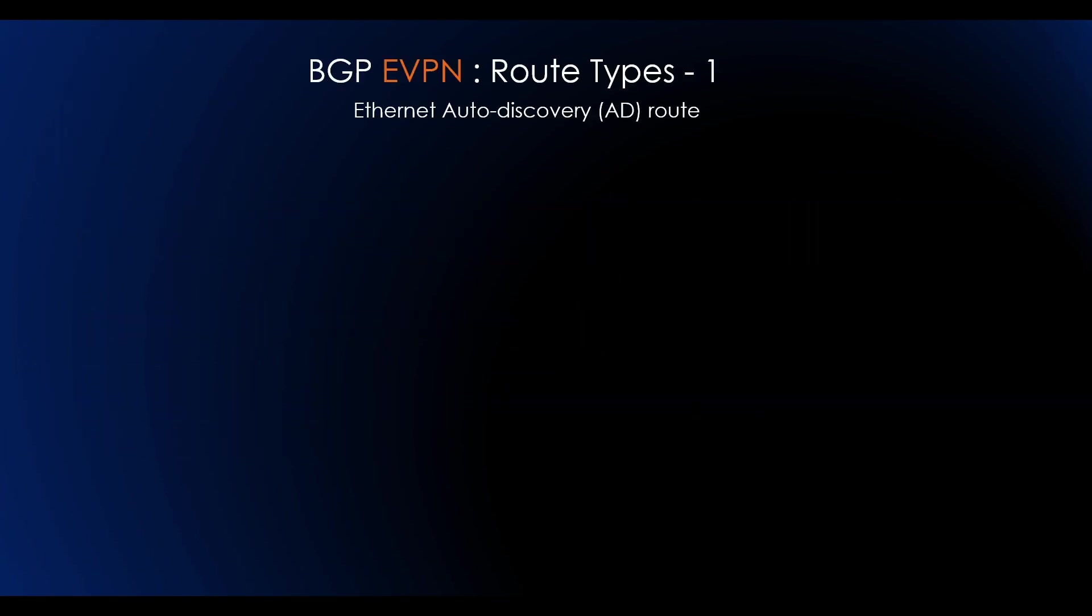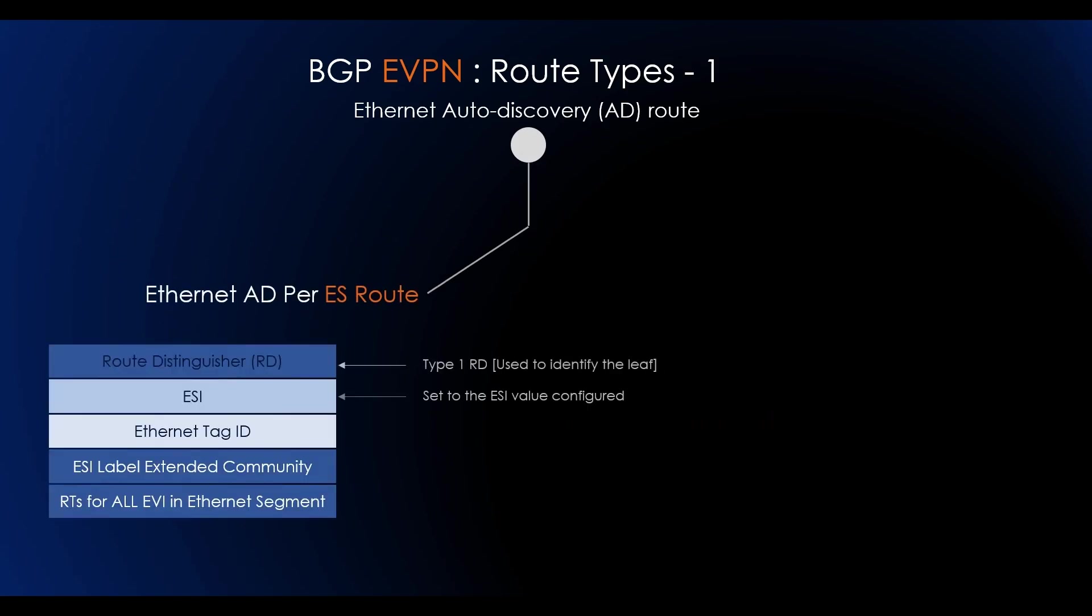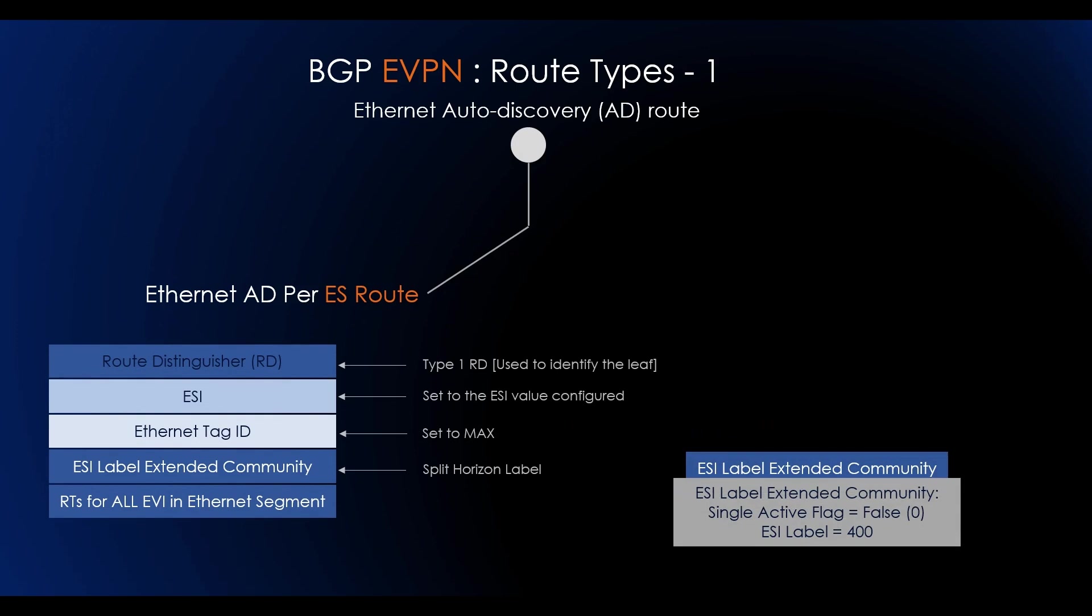EVPN route type 1, which is Ethernet auto-discovery route. The first one is Ethernet AD per ES route. In Ethernet AD per ES route, it is being used to advertise ESI label to the peers. Active-active site leafs must advertise an ESI label in the AD per ES routes. The non-DF must append the ESI label when replicating traffic to the designated forwarder. This is being used for mass withdrawal, or you can say fast convergence, and split horizon.